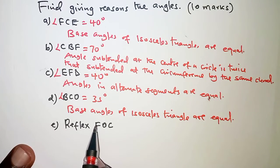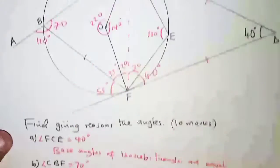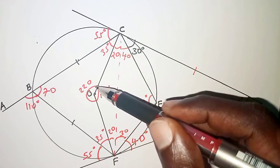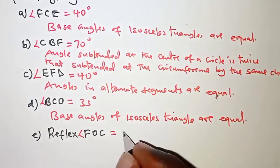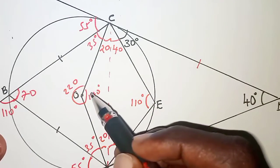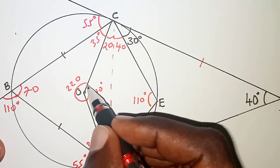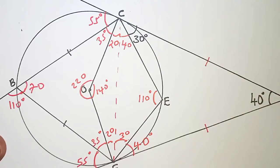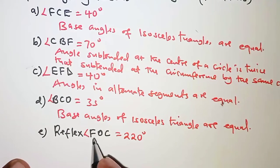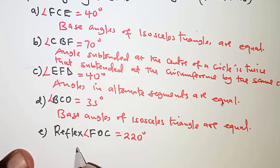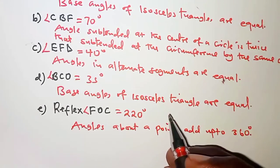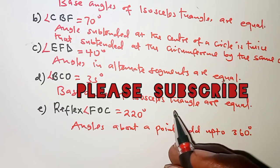Finally, reflex angle FOC. The reflex angle is greater than 180 degrees, and it is 220 degrees. We already found angle FOC to be 140 degrees, so taking 360 minus 140 gives 220 degrees. The reason is that angles about a point add up to 360 degrees. And that is it for this question — thank you for your patience, I hope to see you in the next video. Bye.